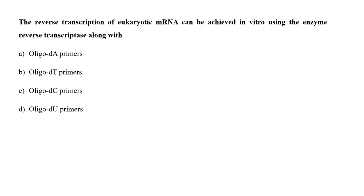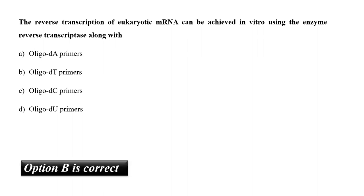The reverse transcription of eukaryotic mRNA can be achieved in vitro using the enzyme reverse transcriptase along with A. Oligo-dA primers, B. Oligo-dT primers, C. Oligo-dC primers, or D. Oligo-dU primers? Oligo-dT primers will amplify only mRNA with a poly-A tail. This is where the primer binds to promote reverse transcription. So the correct answer is option B, Oligo-dT primers.